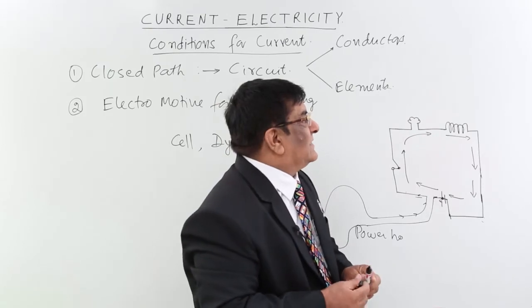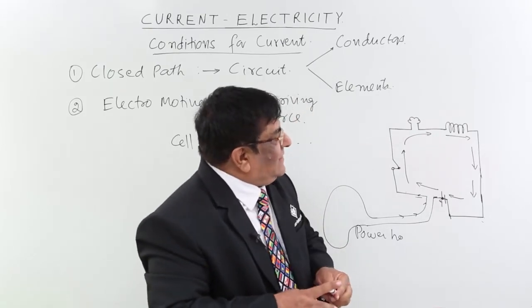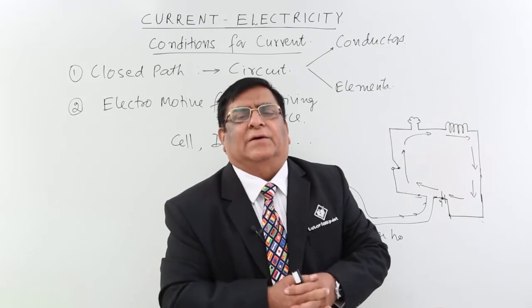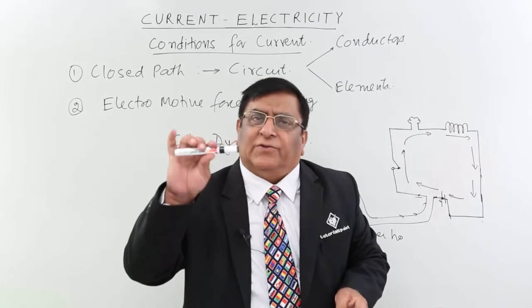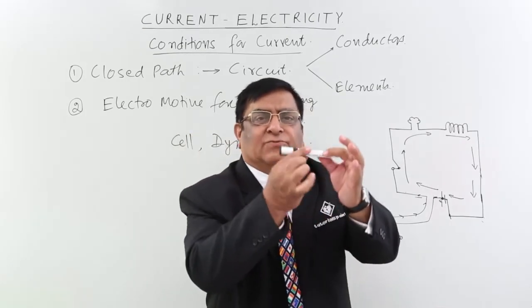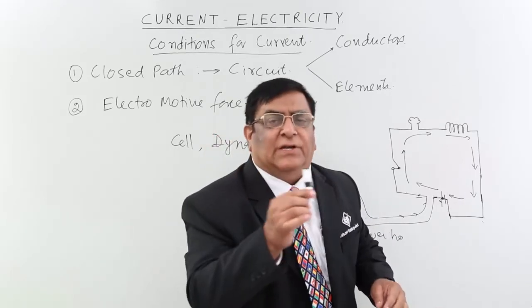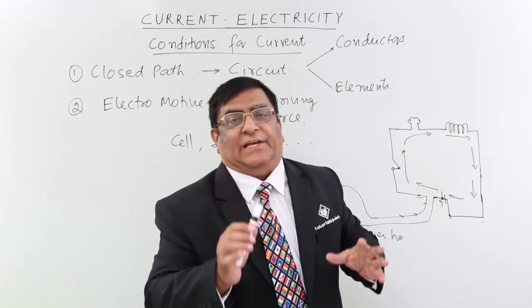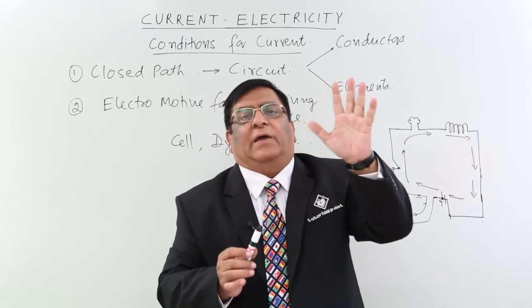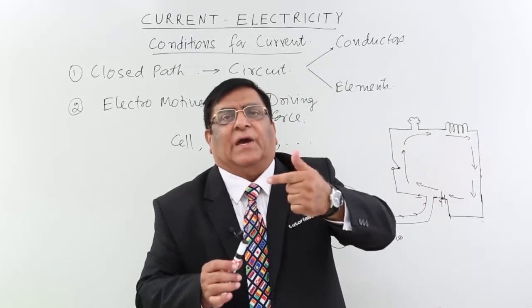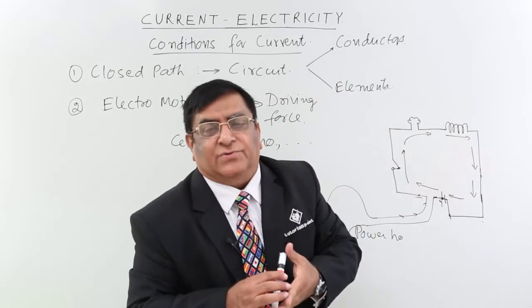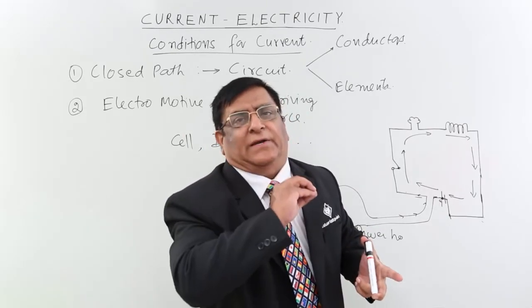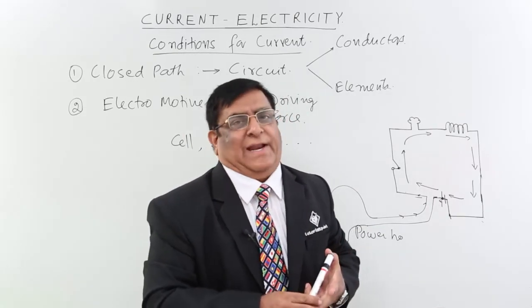In the next lecture we will see different types of currents — there may be currents which are always going in one direction, one which is going in both directions, ones that start for a very small time and close, some currents changing in magnitude, some in direction. We have given them separate names, so we will get an introduction in the next lecture.